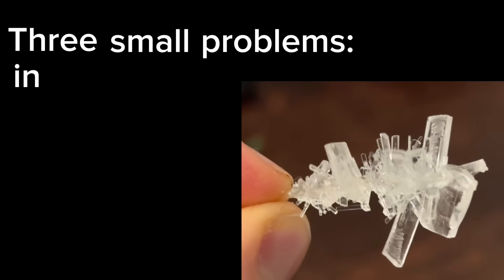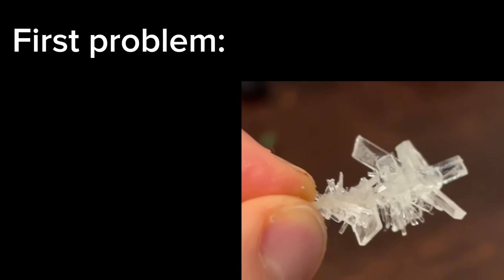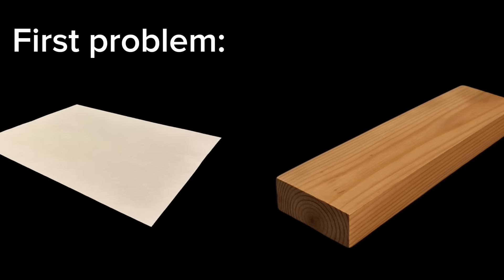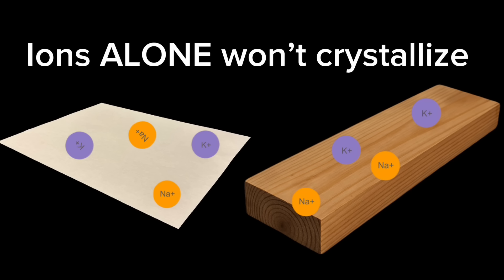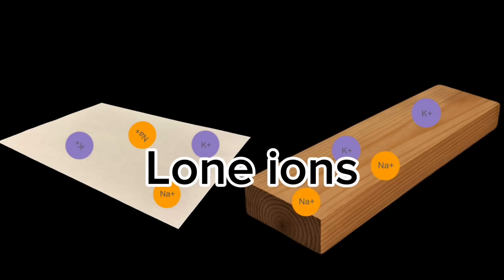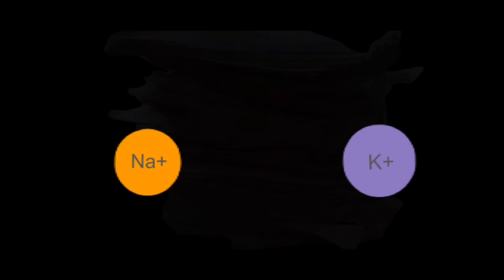However, there are three small problems in the way of doing this. One being that the way the ions exist within the paper or the wood are not really conducive for crystallizing. The ions may exist as simple ions or maybe weakly bound inorganic salts. The second problem is that these ions or these inorganic salts are stuck in the paper. I need to get them out.